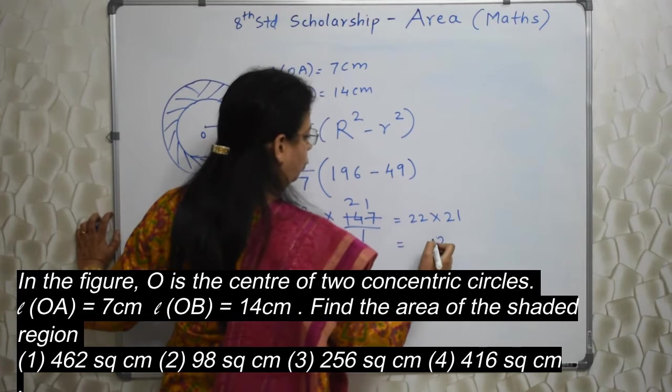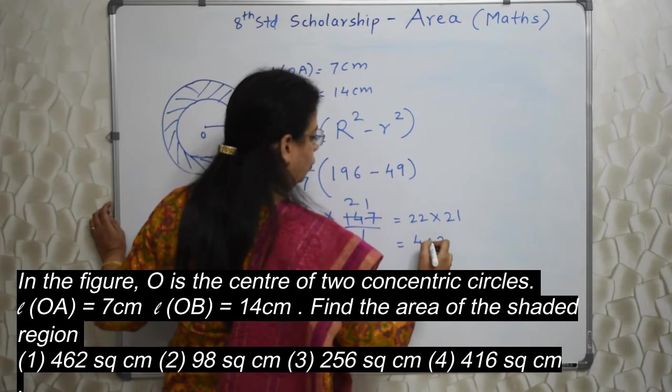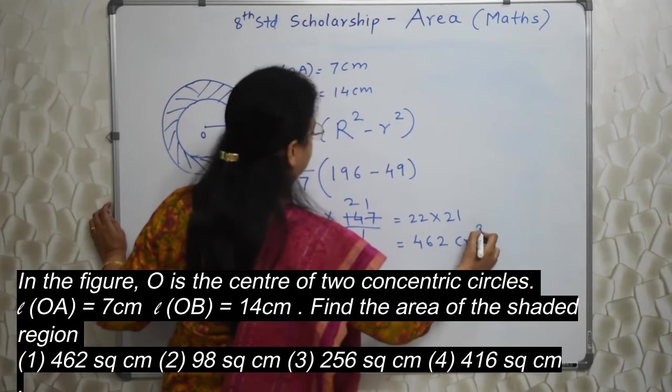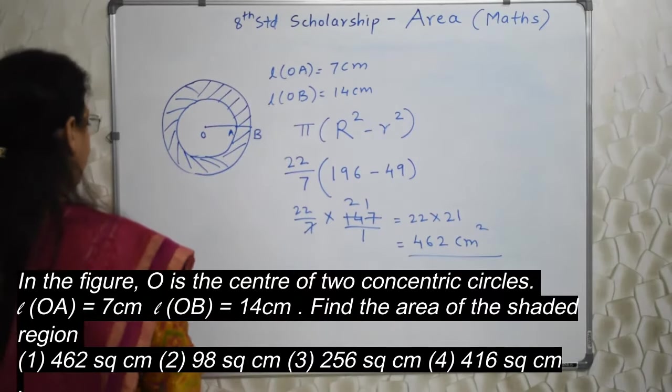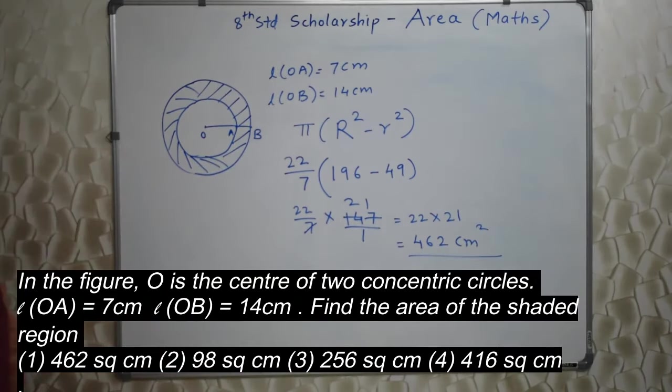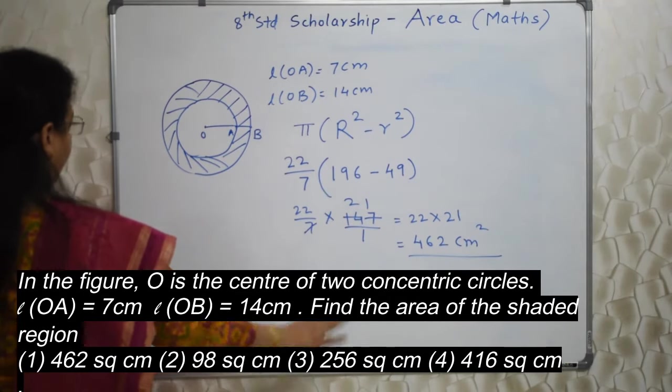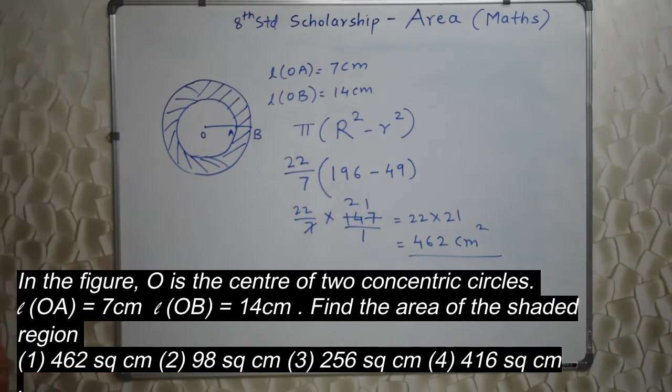So 462 centimeter square. This is the area of the shaded portion. We have just used the formula and sorted. Once you know this formula, this work is not difficult at all. Let's go ahead.